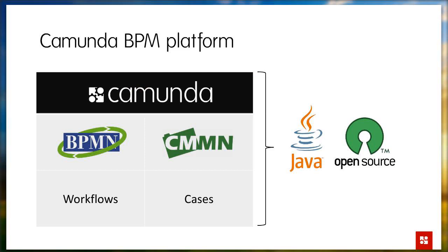As a quick introduction, Camunda is all about process and business process management, especially business process automation. At its very core, we have created a BPMN-conformant process engine that is able to execute structured workflows. BPMN is a standard for describing business processes in a user-friendly graphical way that is also directly executable. Besides that, Camunda also covers unstructured workflows — called cases — with a standard called CMMN, which stands for Case Management Model and Notation, also by OMG.